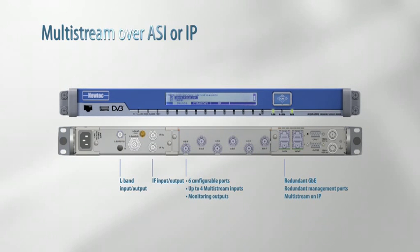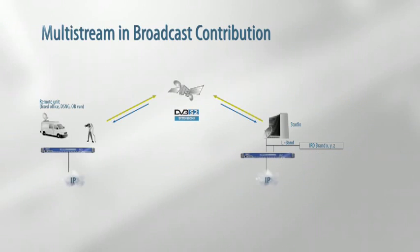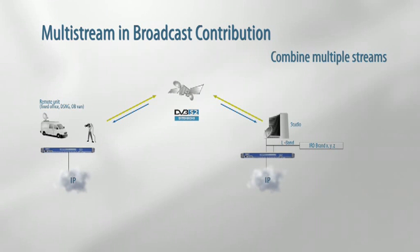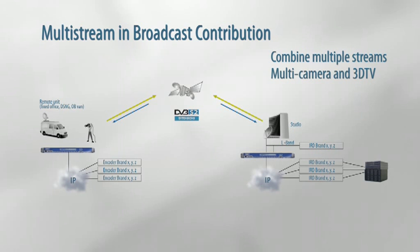The MDM 6100 supports multistream. Multistream can aggregate a number of transport streams into a single satellite carrier. It can be used in broadcast contribution and distribution, where multiple ASI or IP encoder sources can be aggregated into one carrier over satellite.